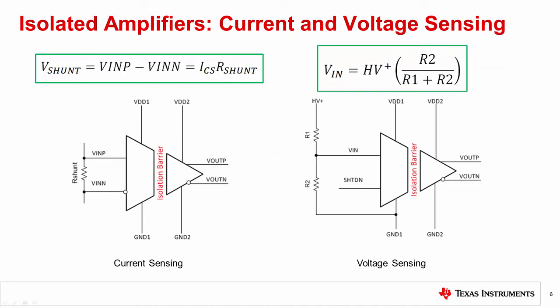Here are some common examples of applications for isolated amplifiers: current sensing and voltage sensing. TI offers a variety of isolated amplifiers for shunt-based current sensing with input ranges of either plus/minus 50 millivolts or plus/minus 250 millivolts. The input voltage range of the isolated amplifier determines the value of the shunt resistor based on the current to be measured. For voltage sensing applications that use voltage division, TI offers isolated amplifiers with input ranges up to plus/minus 12 volts. For additional information on isolated amplifiers, please visit TI.com/isolation and click on the isolated amplifiers link.